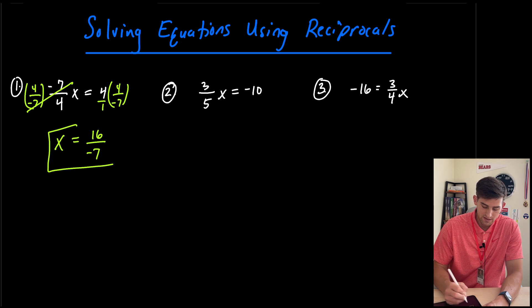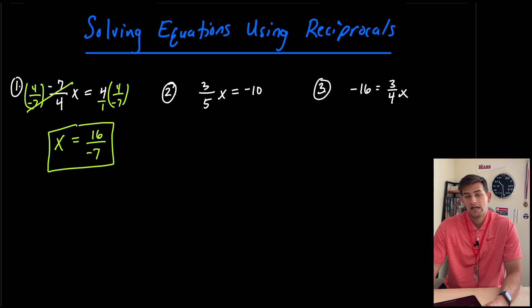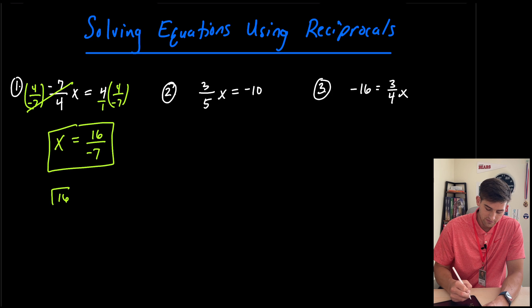Now we could leave our answer like this as an improper fraction, but if the question asks you to write it as a mixed number, remember we could just divide that and write our answer as a mixed number. So we could do 16 divided by seven. We know that's going to go in there one time, and that's going to be nine, not nine.